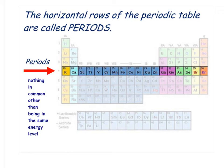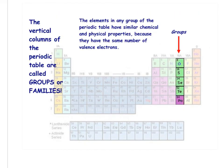As you go across, those are called periods, and they don't really have anything in common other than that they're in the same energy level. Now the vertical columns are called groups or families, and we'll name these in class. They react the same way because they have the same number of valence electrons, so the groups have lots of things in common.